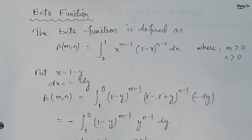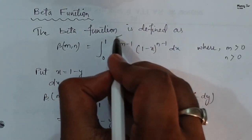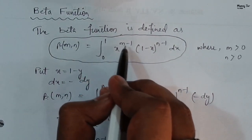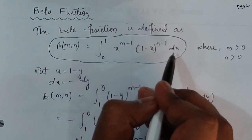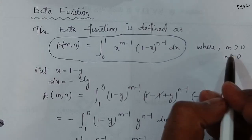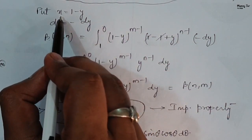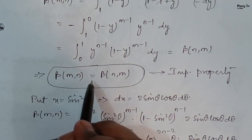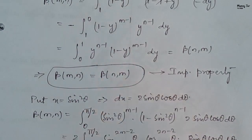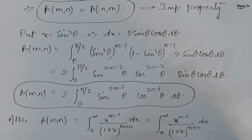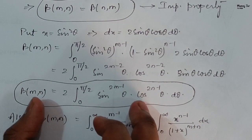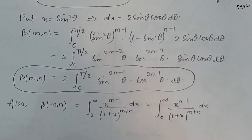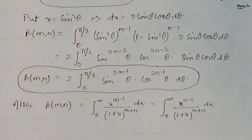To summarize: we first saw the general formula of beta function — Beta of m comma n equals integration from 0 to 1 of x to the power m minus 1 into 1 minus x to the power n minus 1 dx, where m and n are both greater than 0. Then by putting x equals 1 minus y, we derived the important property Beta of m comma n equals Beta of n comma m. Then we derived the trigonometric form, and the formula with the integral from 0 to infinity. In the next video we will see gamma function. Thank you.